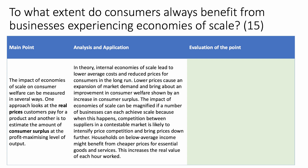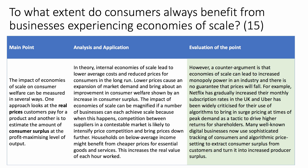But then we need to evaluate the point. However — a counter-argument is that economies of scale can lead to increased monopoly power in an industry, and there's no guarantee that prices will go down. For example, Netflix in the UK has gradually increased their monthly subscription rates. Uber has been heavily criticised for using algorithms to bring in surge pricing — multiple fares at times of peak demand, particularly to drive profits to shareholders. And many businesses now use sophisticated consumer tracking through cookies and algorithmic price setting to extract consumer surplus and turn it into increased producer surplus or profit.